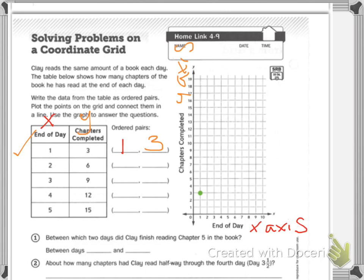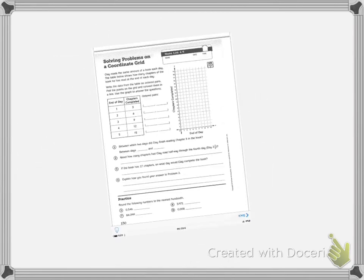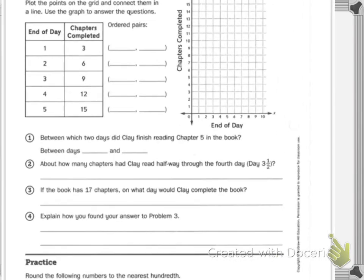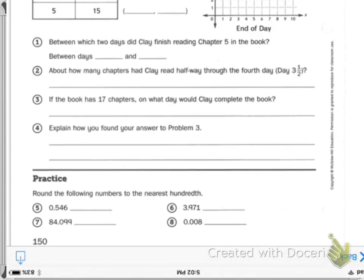So if we look at the questions then at the bottom of our page, you'll have yours in front of you. I need to reboot up. It says, between which two days did Clay finish reading chapter 5 of the book?